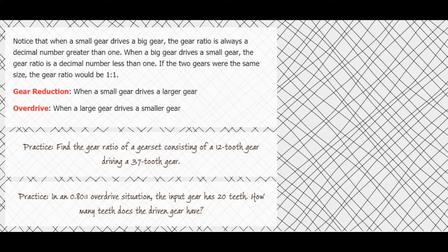If a bigger gear drives a smaller gear, you'll always get a gear ratio less than 1 — for example, 0.5 to 1, 0.25 to 1, or 0.67 to 1. That's called an overdrive situation, which is what we have at highway speeds. And if you had two gears of the same size, the gear ratio would just be 1 to 1.